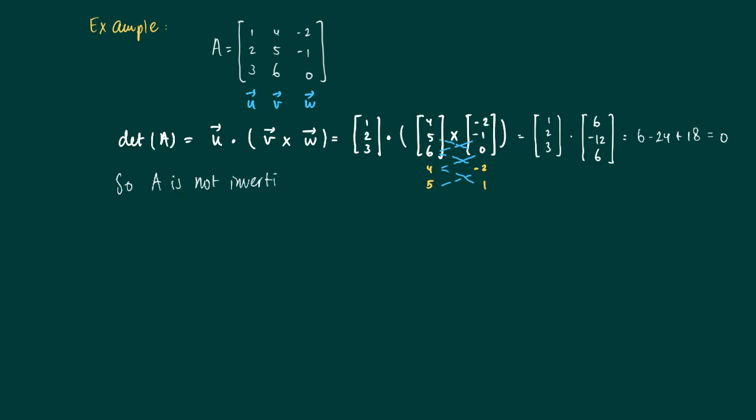We may check this also in a different way by noting that W is actually two times the first column minus the second one. So W is a linear combination of the first two columns.